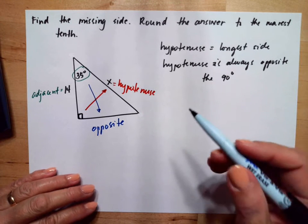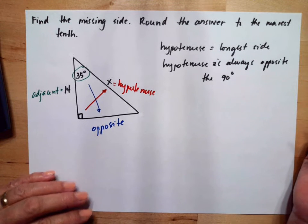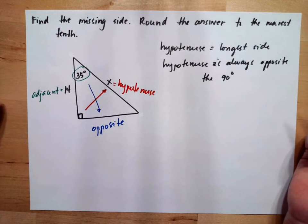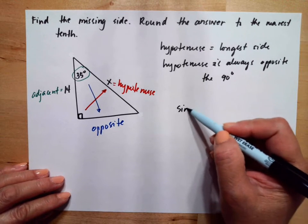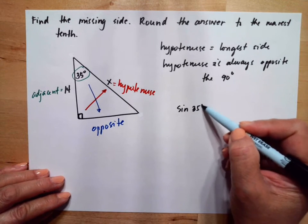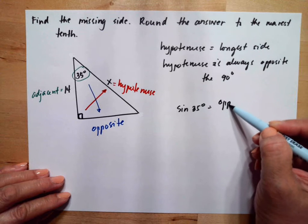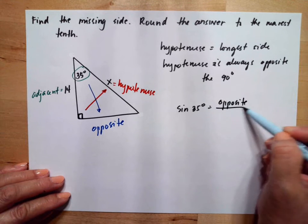We will identify which trigonometric function we can use. So we have sine of 35 degrees is opposite over hypotenuse.